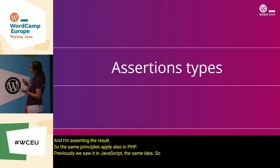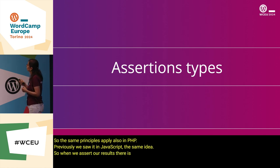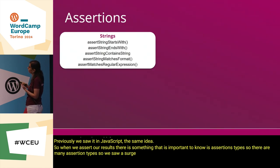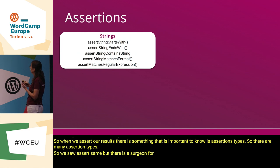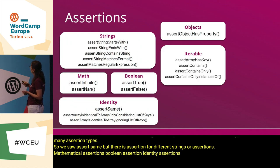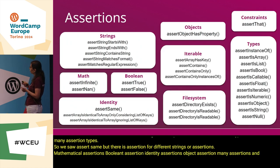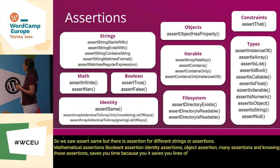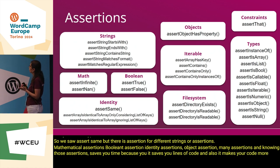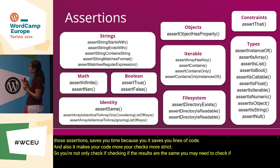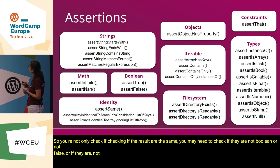When we assert our results, it's important to know assertion types. There are many assertion types — we saw assertEquals, but there are assertions for strings, mathematical assertions, boolean assertions, identity assertions, object assertions, and many more. Knowing these saves you time because it saves you lines of code, and also makes your checks more strict. You may need to check if results are not boolean, not false, or not an integer.